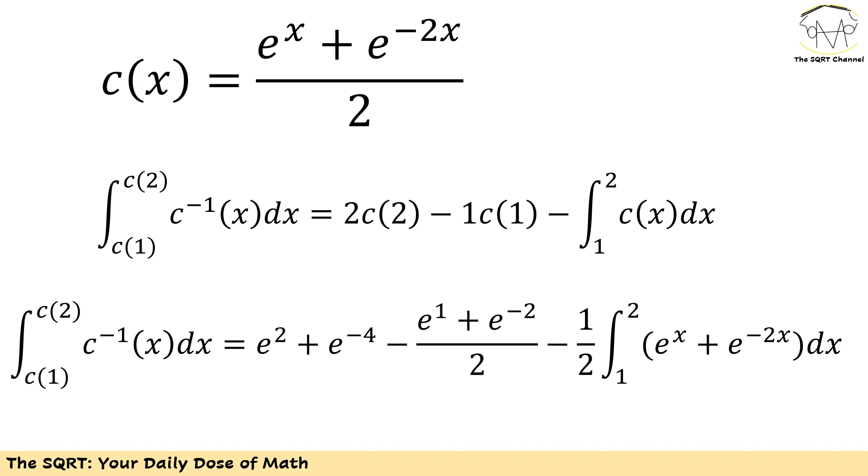Now based on that, I'm just going to replace the values that I need to. Instead of using c of 2, I'm going to use e to the power of 2 plus e to the power of negative 4 over 2 and then I need to multiply that by 2. It's going to be just e to the power of 2 plus e to the power of negative 4. I'm going to use the same approach for 1 times c of 1. And finally, I'm going to replace the function that we have for c of x for the integral that I need to take.